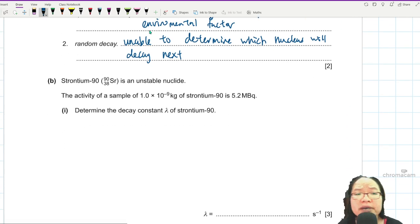Part B. Strontium is unstable. And so are we. Activity of a sample of this much strontium, this is mass, this is activity, there's a mega becquerel here. Determine the decay constant lambda of strontium 90. So we should know that A is equal to lambda N.